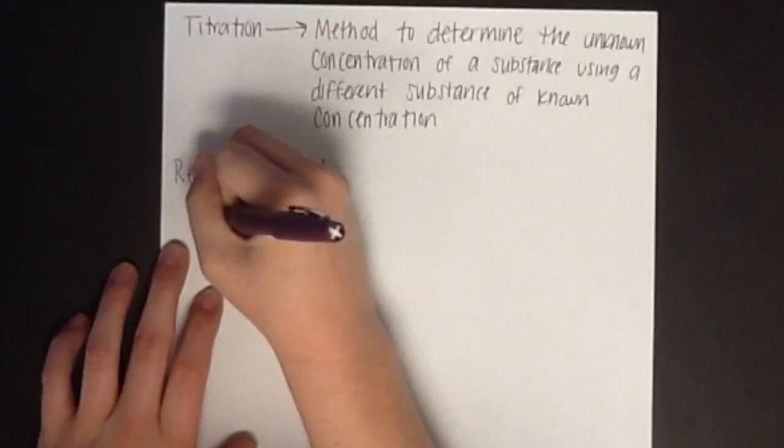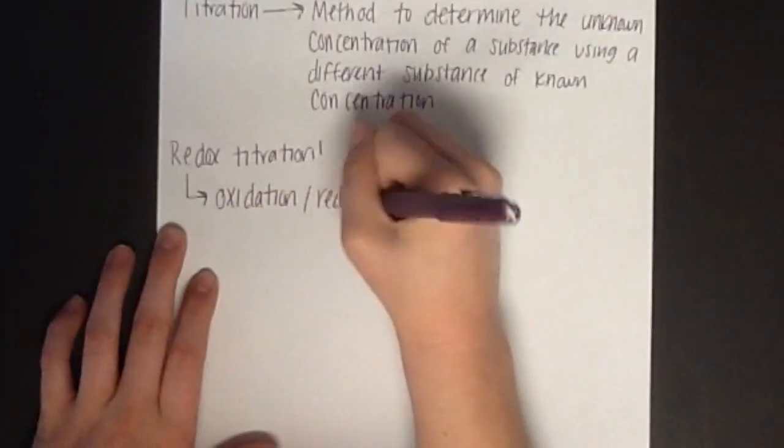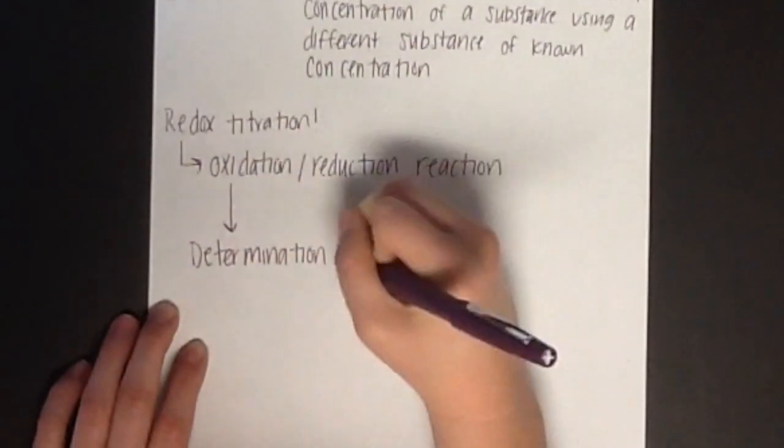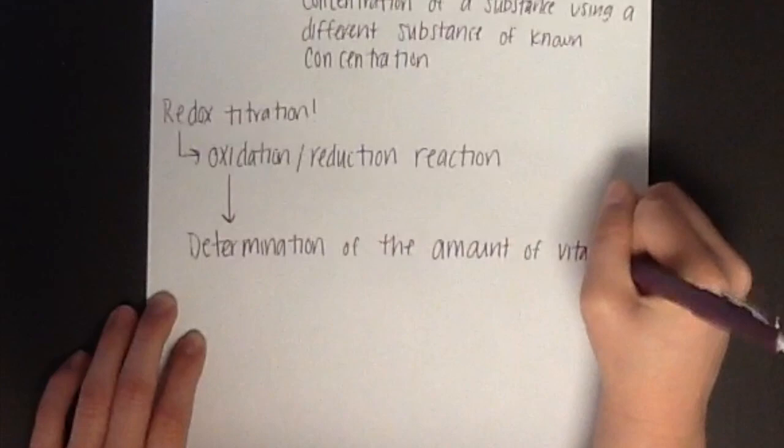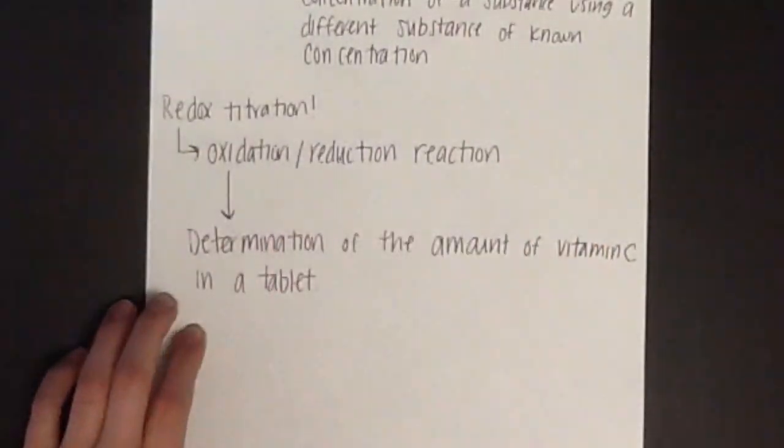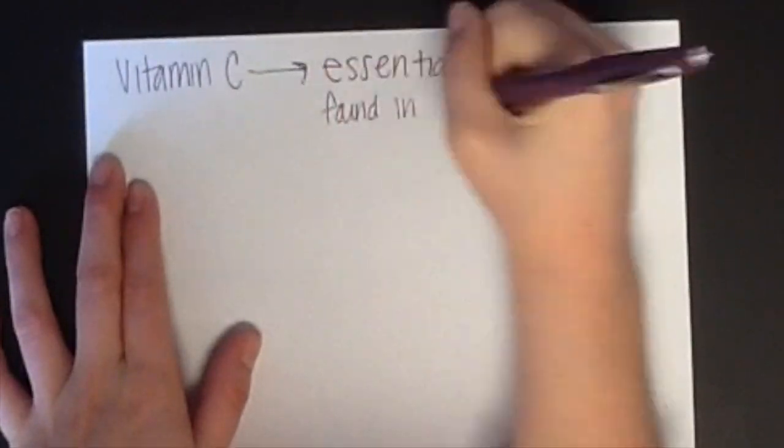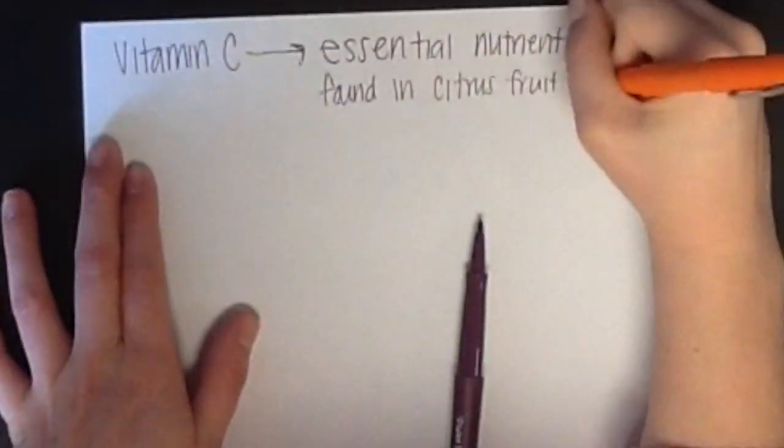As we all know, redox means an oxidation-reduction reaction. We will use this type of titration to determine the amount of vitamin C in a tablet. Vitamin C is an essential nutrient and is found in citrus fruits such as oranges.